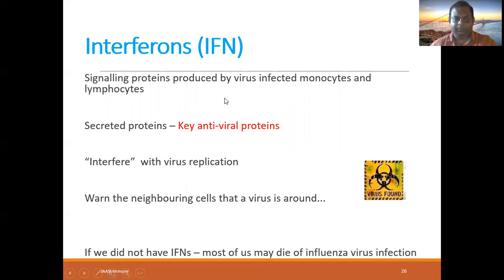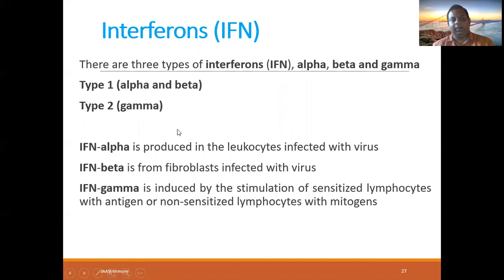About interferons: they are secreted proteins produced mainly by monocytes, lymphocytes, and virally infected cells. They are key antiviral proteins that interfere with virus replication. They warn neighboring cells that a virus is around. Without interferons, most of us might die from viral infection.